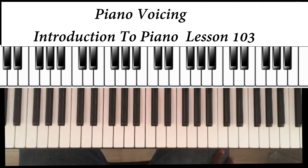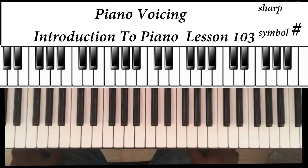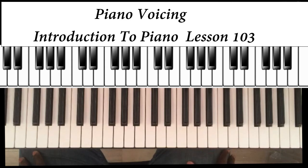Sharps are basically movements forward — half steps, semitones. The symbol for sharps is the hash symbol. Now, flats are just the opposite of sharps. Sharps move forward by semitones, but flats move backwards by a semitone or half step.